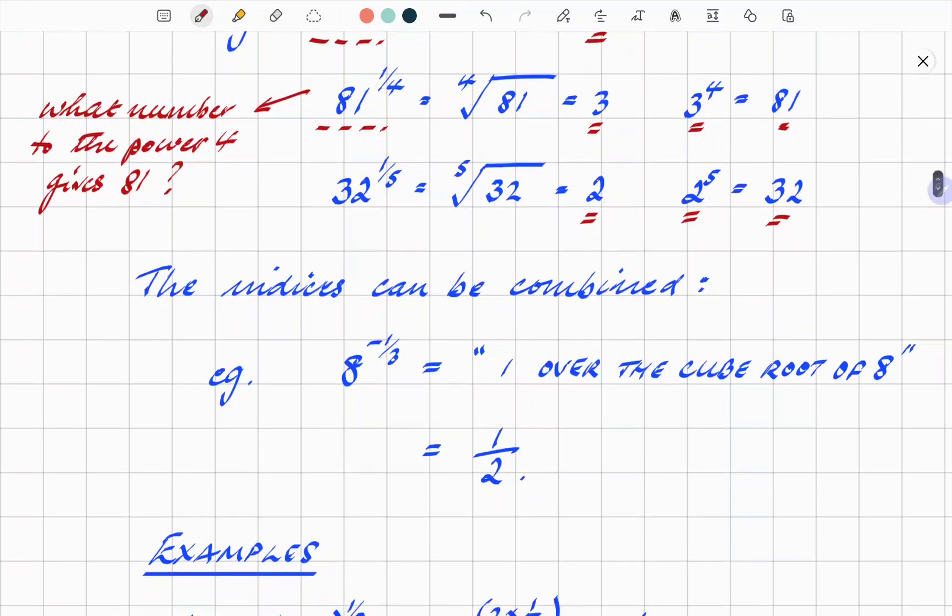The next thing in the type of questions that you're likely to get in your GCSE or, you know, grade 10, if you're in the States, for example, that level, the questions that you might get, the indices can be combined. So, you know, this example here, 8 to the power minus 1 third. Translating that into plain English, it means 1 over, the negative part of the power, the minus, means 1 over the cube root of 8. The result, at the end of the day, is a half, because the cube root of 8 is 2.